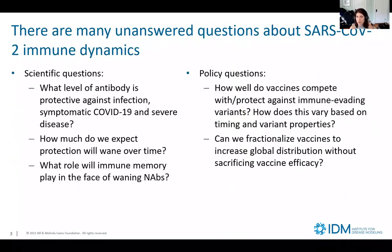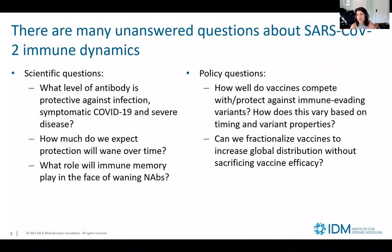There are many unanswered scientific questions around SARS-CoV-2 immune dynamics. We don't yet have a strong understanding of what level of antibody is protective against infection, symptomatic COVID-19, and severe disease — what people refer to as a correlate of protection. Additionally, how much do we expect that protection to wane over time? Antibodies wane naturally, but we have immune memory that kicks in when faced with a new challenge. What role will immune memory play in the face of waning NAbs?